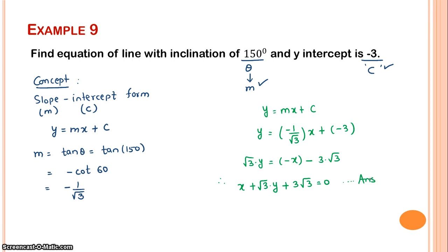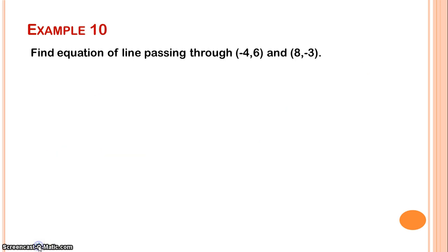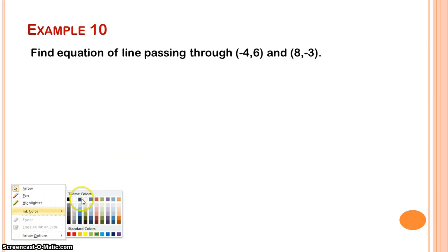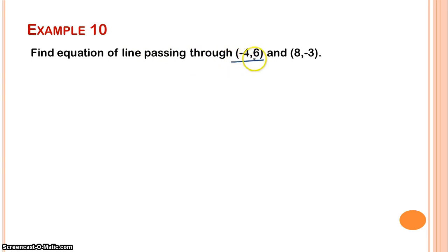Example number 9 is clear. We used equation of line formulas. Let us see one more example. Example 10: Find equation of line passing through (-4, 6) and (8, -3). The concept to be used is two-point form. Each example uses different equations of line. When two points on a line are given, suppose one point is (x₁, y₁) and second point is (x₂, y₂).